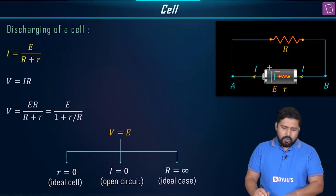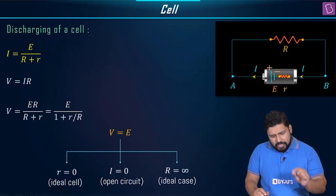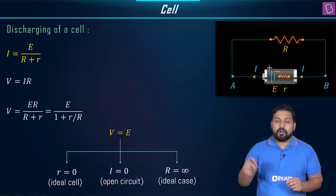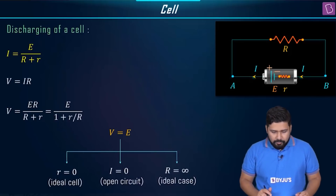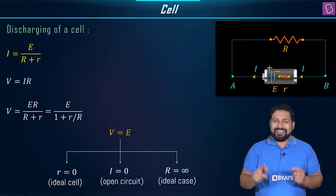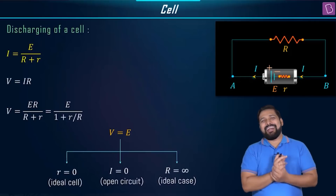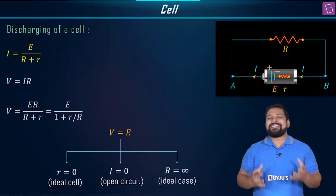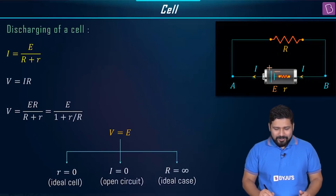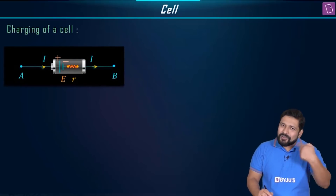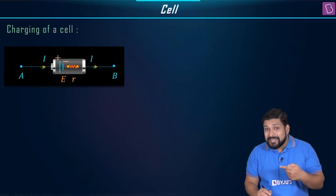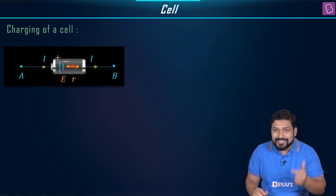This was all for discharging of a cell, where the cell drives the charges across the circuit. But when our mobile gets discharged, we plug in and the current flows in the opposite direction — that is called charging of a cell. In charging, the direction of current is reversed: current enters from the positive terminal and exits from the negative terminal.